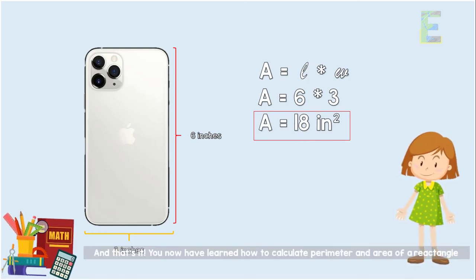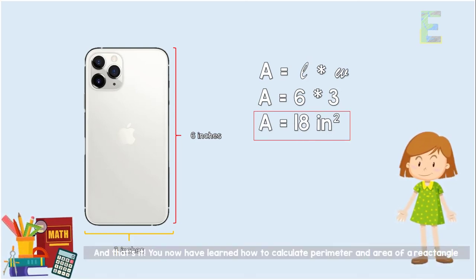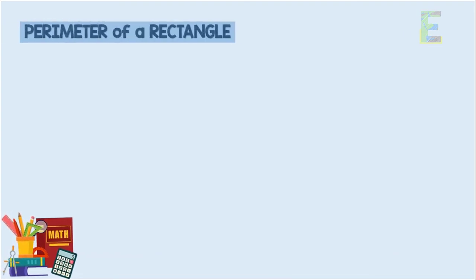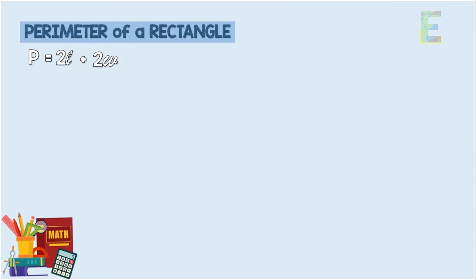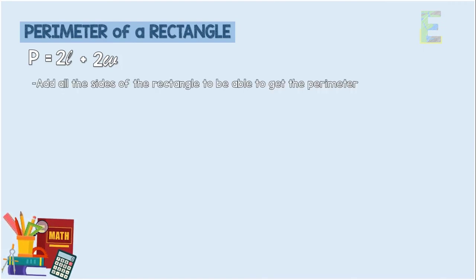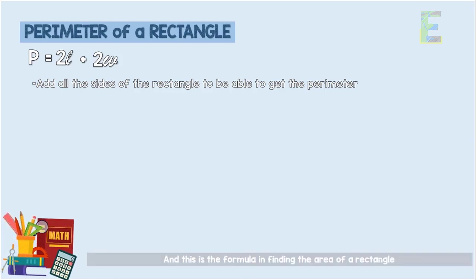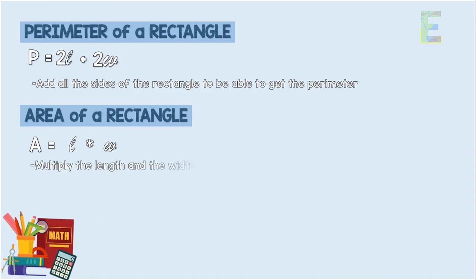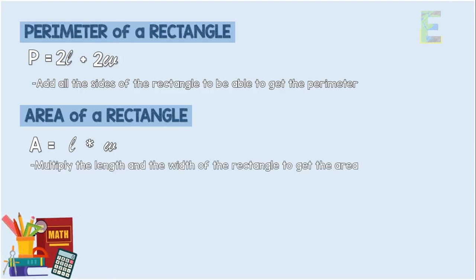And that's it. You have now learned how to calculate the perimeter and area of a rectangle. The formula for finding the perimeter of a rectangle is P equals 2L plus 2W — just add all the sides of the rectangle. And the formula for finding the area of a rectangle is A equals L times W — simply multiply the length and the width to get the area.